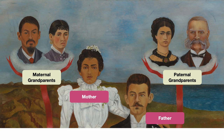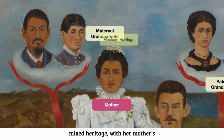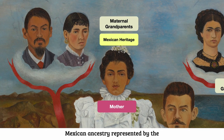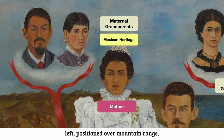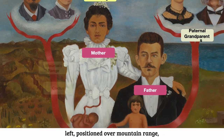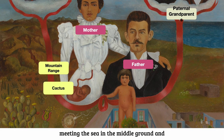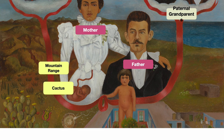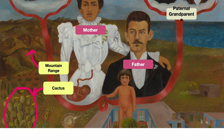The placement of these portraits serves to emphasize Kahlo's mixed heritage, with her mother's Mexican ancestry represented by the portraits of her grandparents on the top left, positioned over a mountain range meeting the sea in the middle ground, and cactus plants in the foreground — a common sight in Mexico.